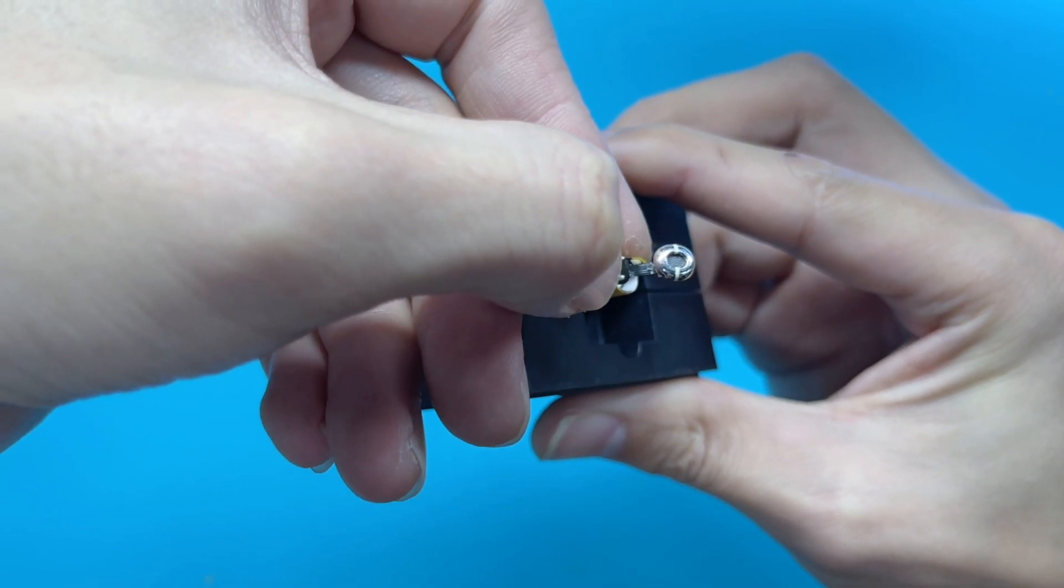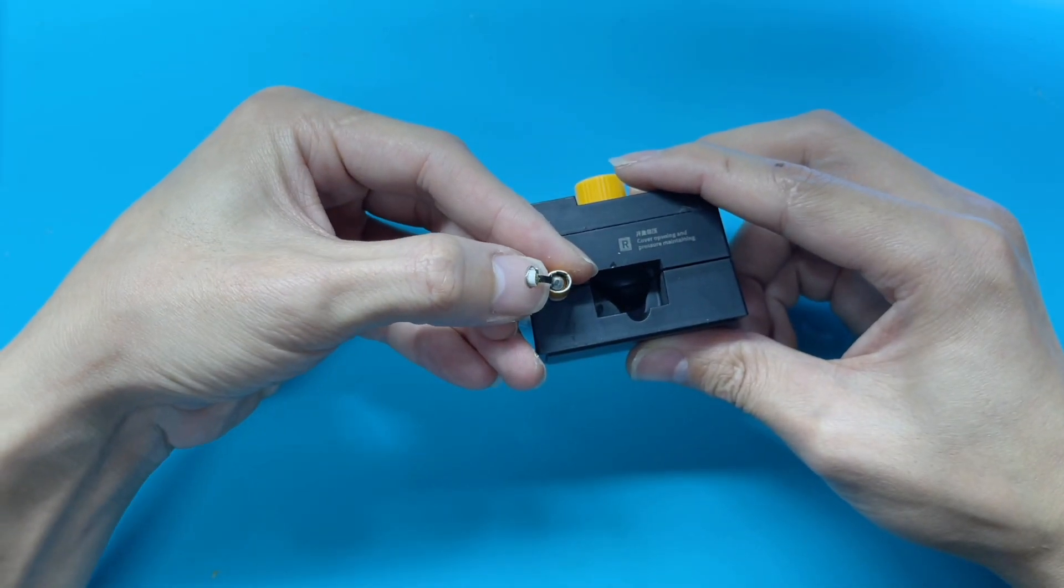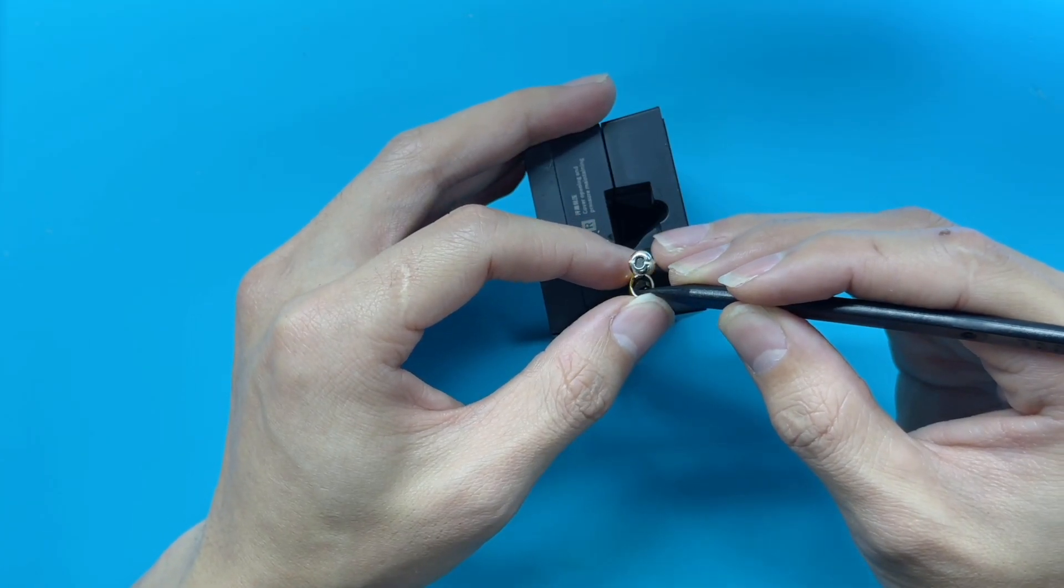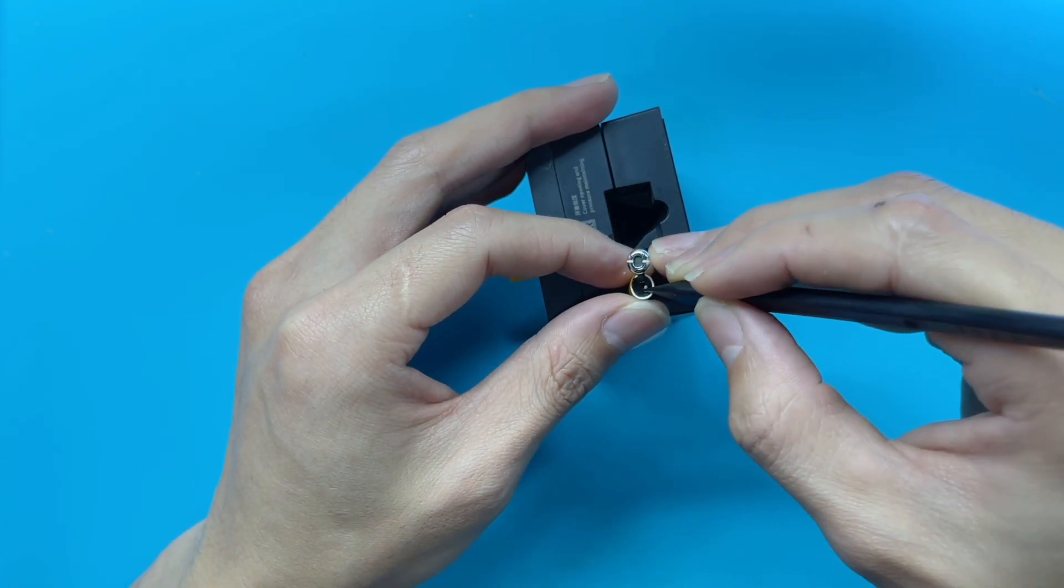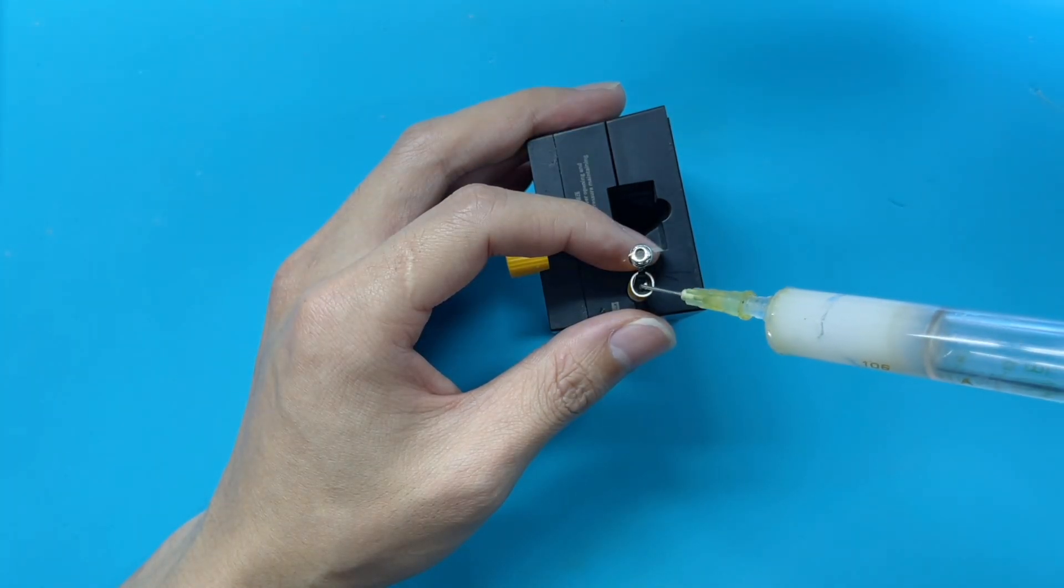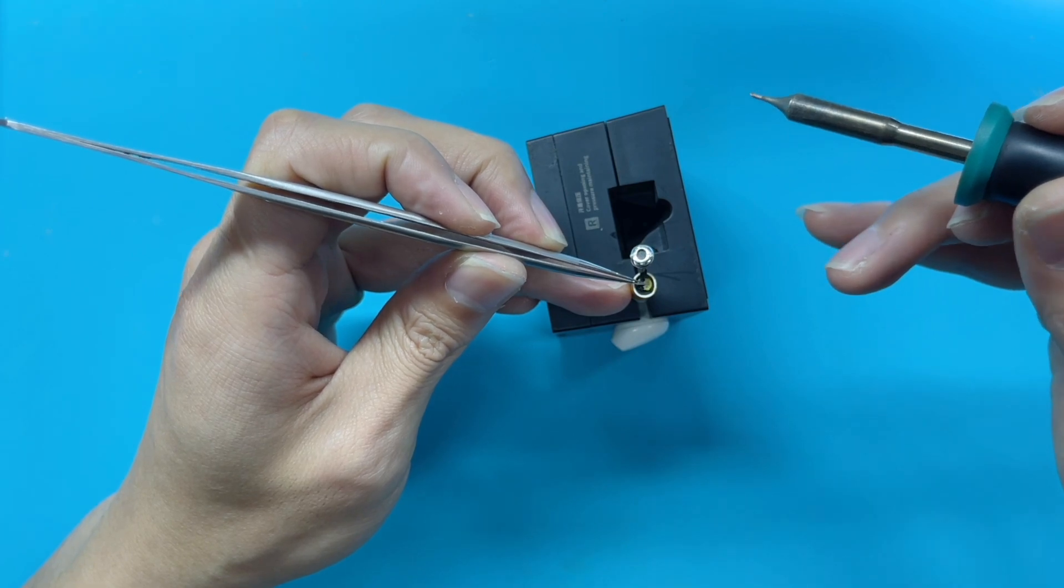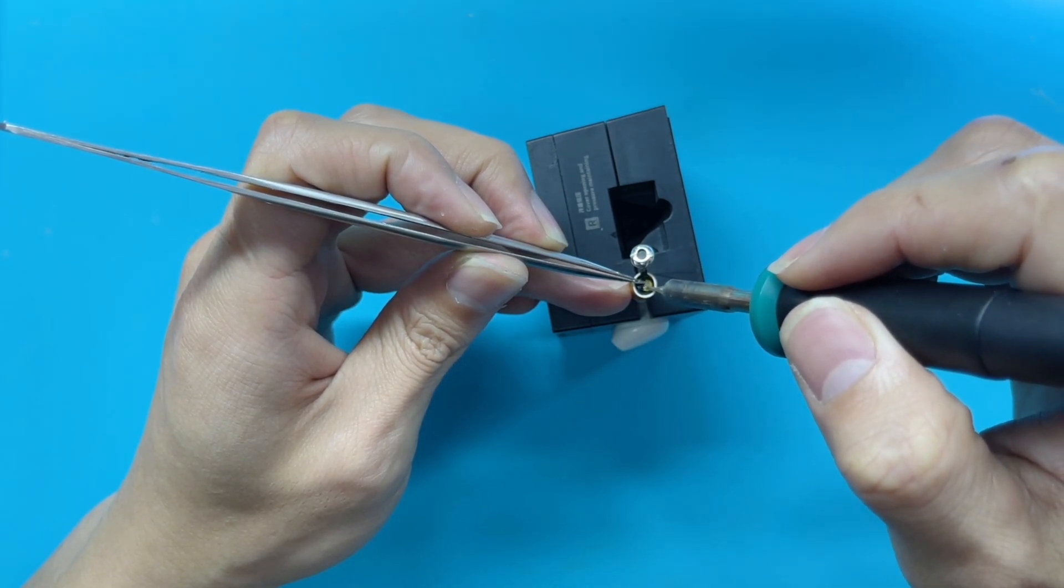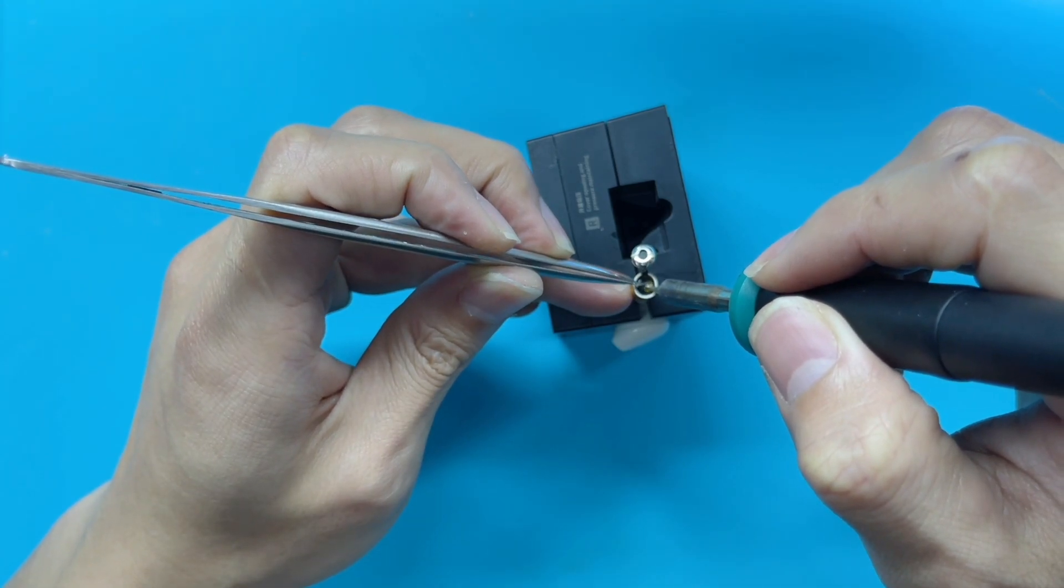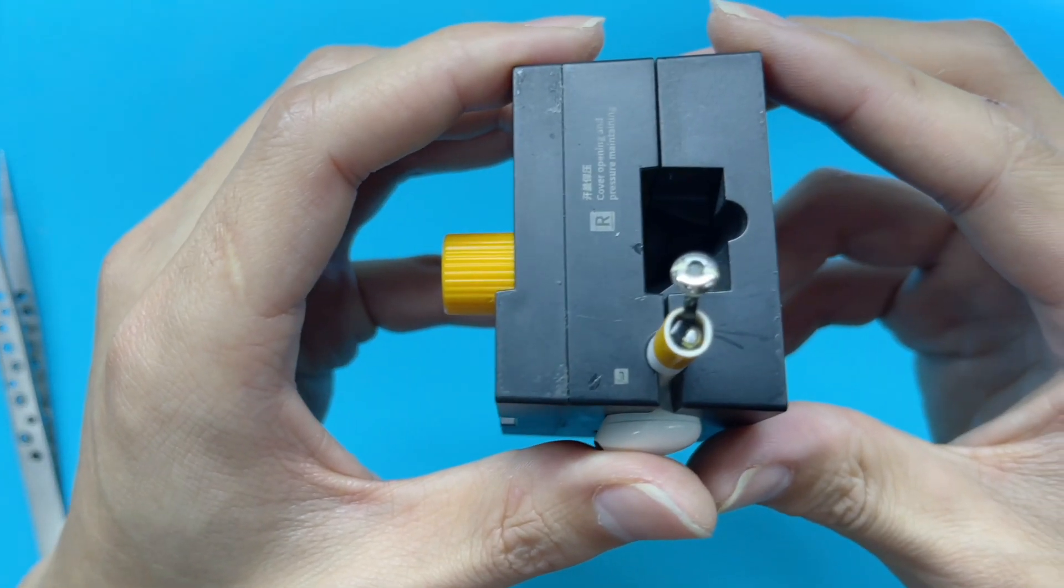We need to hold the flat cable to avoid damage to the shell. After connecting the positive, let's do the same thing to the negative. Okay, that's done.